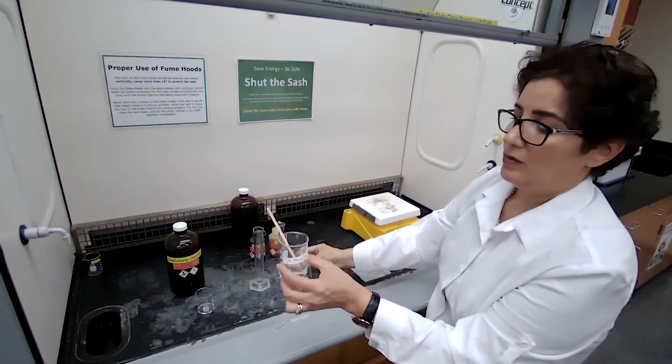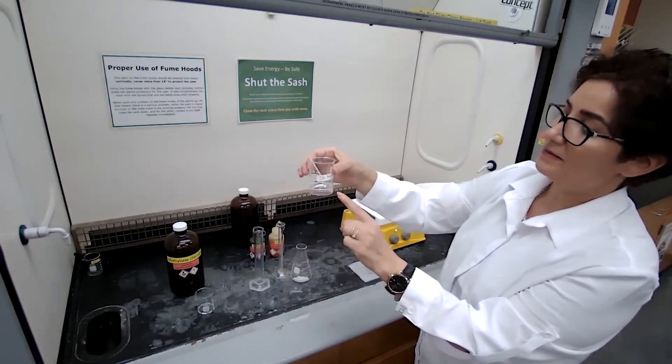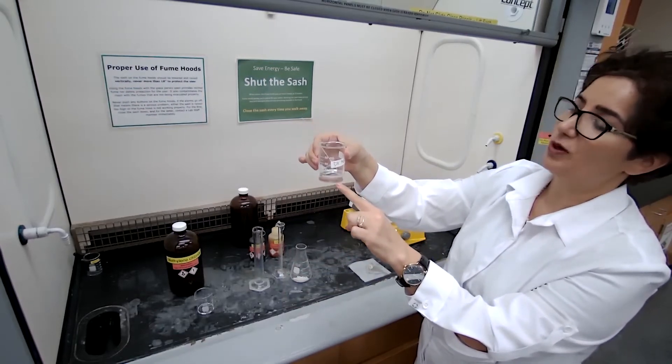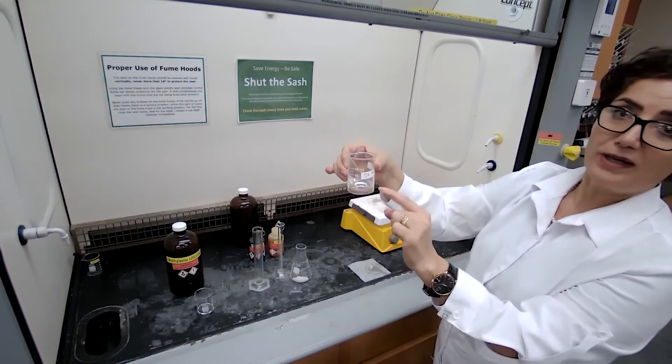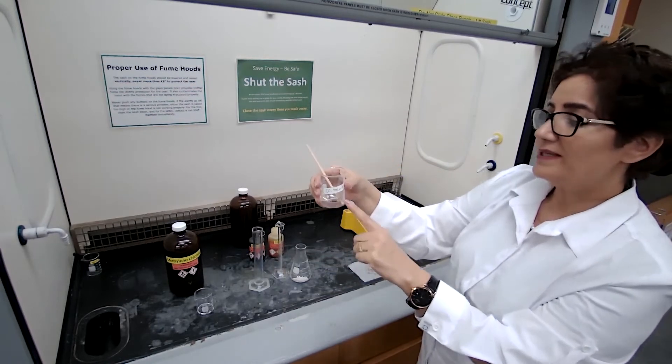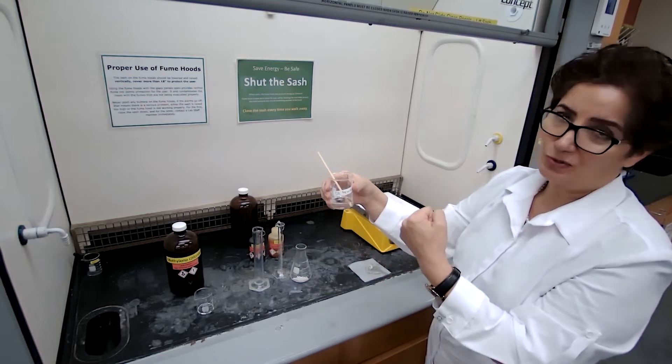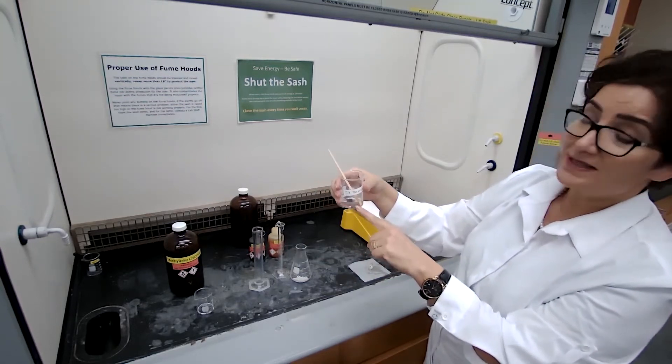Now, what we have in the beaker is the methylene chloride, mainly methylene chloride. We would never get this much of an oil and some oil in there. We need to evaporate the methylene chloride and recover the oil.